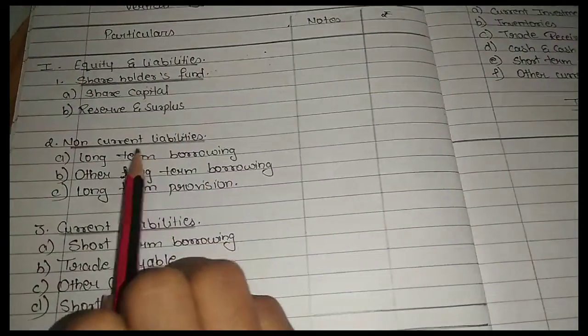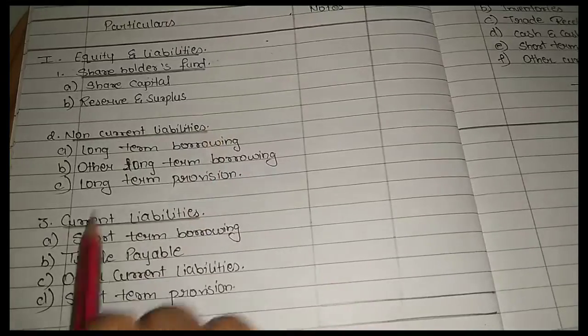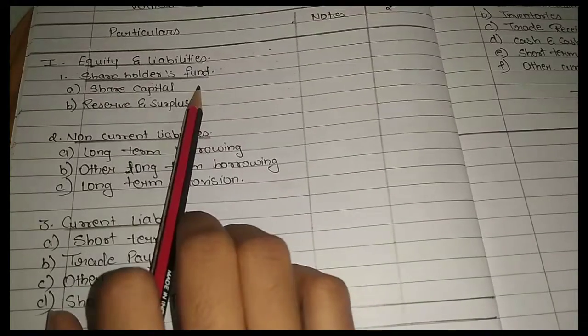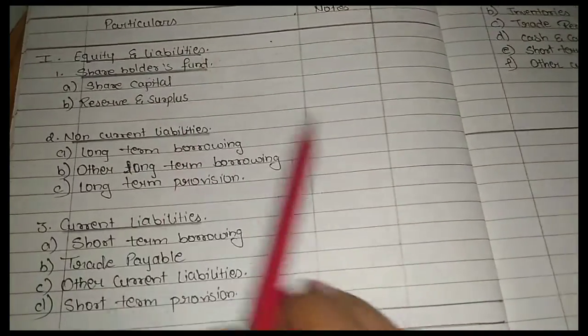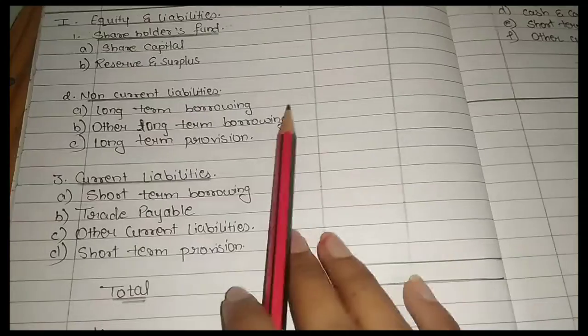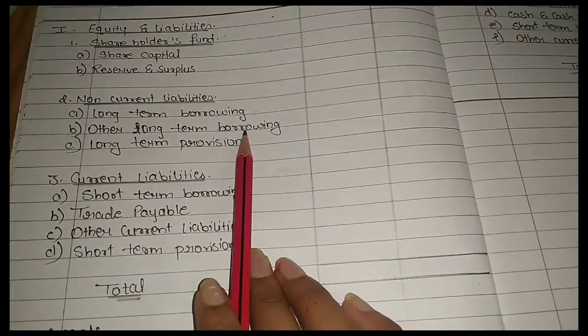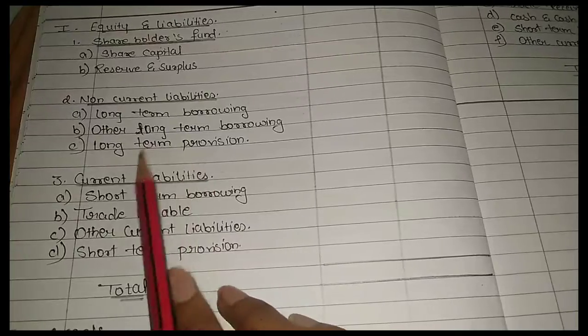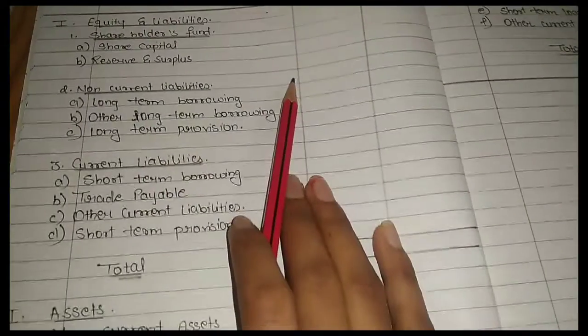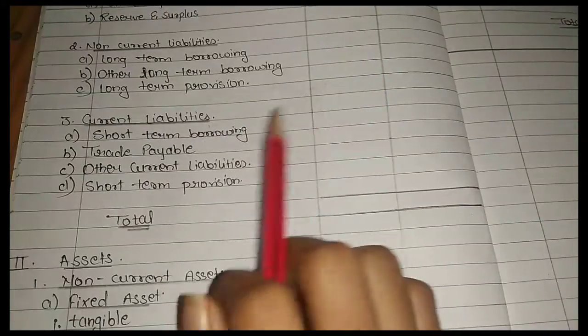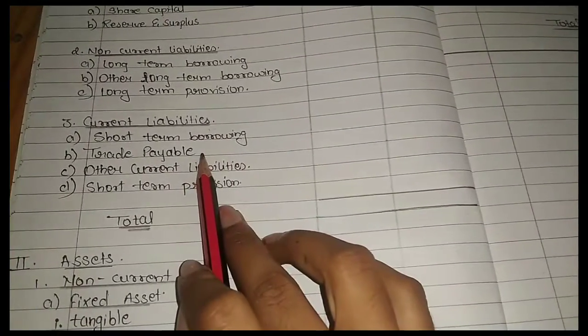One thing is vertical balance sheet format. Here you can see equity and liabilities: non-current liability and current liability. Shareholder fund: share capital, reserve and surplus. In long-term borrowing, other long-term provisions, long-term provisions.